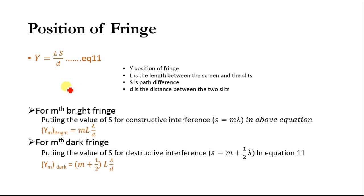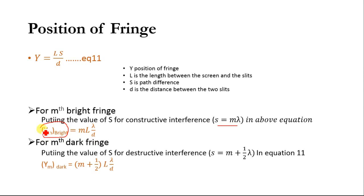Now we will determine the position of bright and dark fringes. We know that Y = LS/D, where Y is the position of the fringes, L is the length between the screen and the slit, S is the path difference, and D is the distance between the two slits. For bright fringes, putting S = Mλ (M = 1, 2, 3), we get: Y_M(bright) = MLλ/D. For dark fringes, putting S = (M + 1/2)λ, we get: Y_M(dark) = (M + 1/2)Lλ/D.